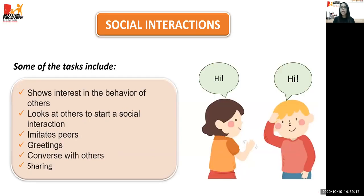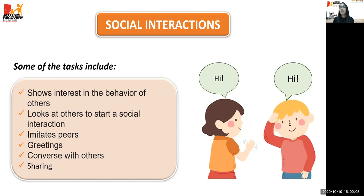Tasks under social interaction include observing the behavior of others, looking at others to start a social interaction, imitating peers, greetings — both initiating and returning — conversing with others, and sharing — whether the child shares toys or asks 'can I have that?' when they want something from another child. As shown in the example, two children greet each other by saying hi.